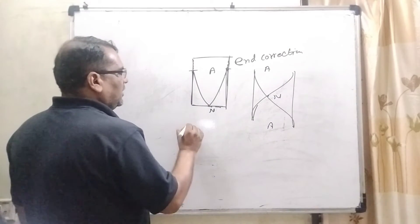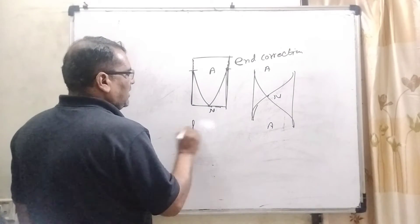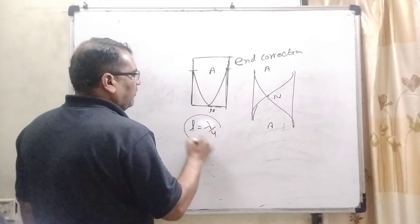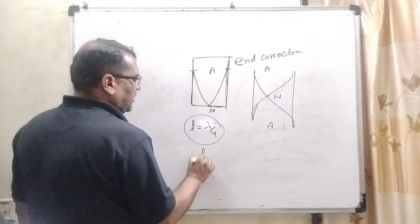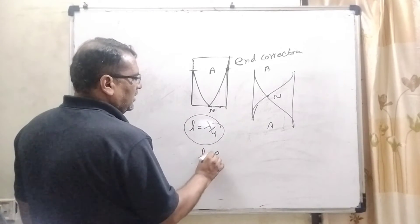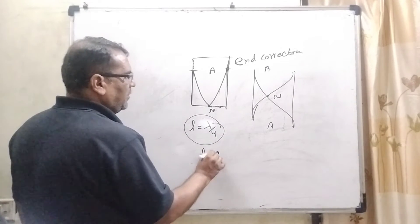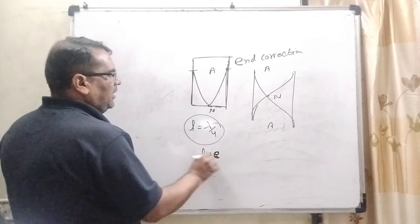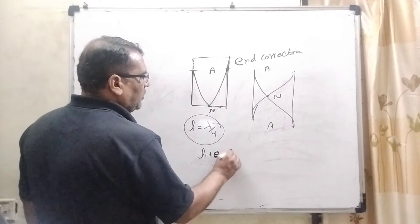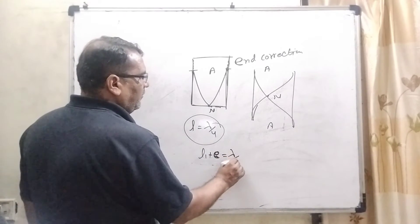So therefore, in the first resonance, instead of L equal to lambda by 4, we substitute L1 plus E, where E denotes the end correction, equal to lambda by 4.